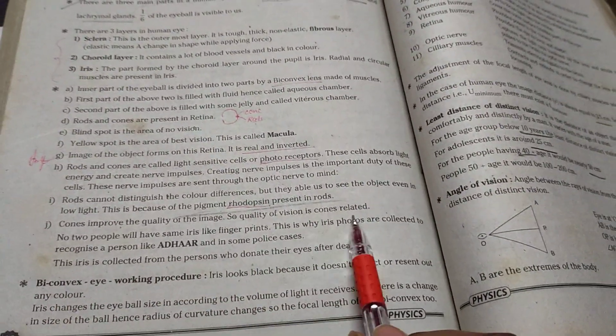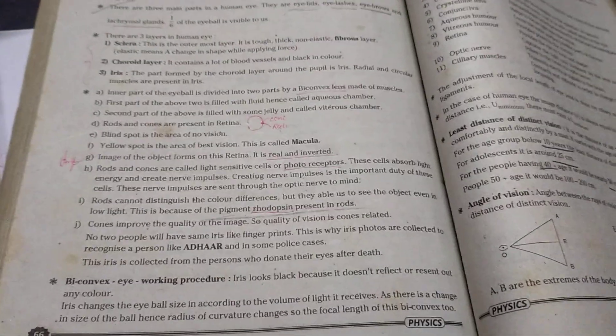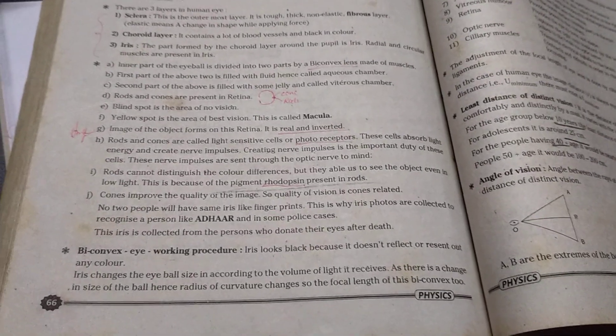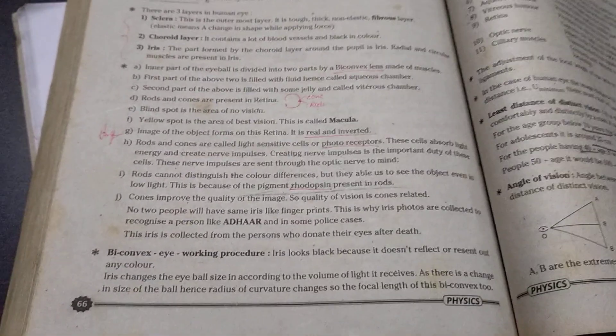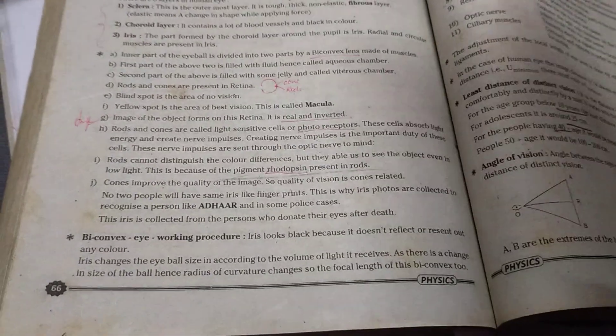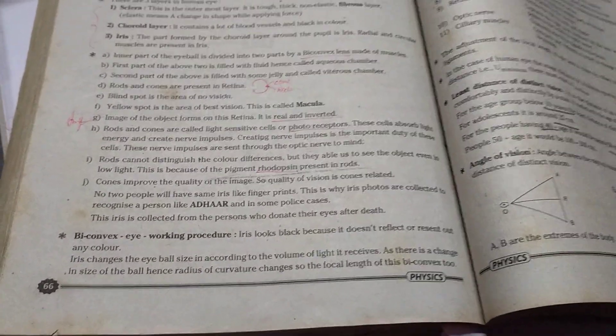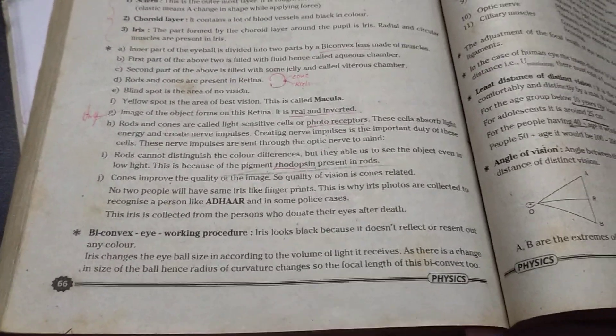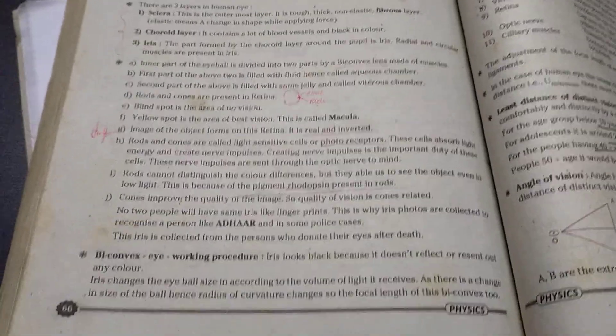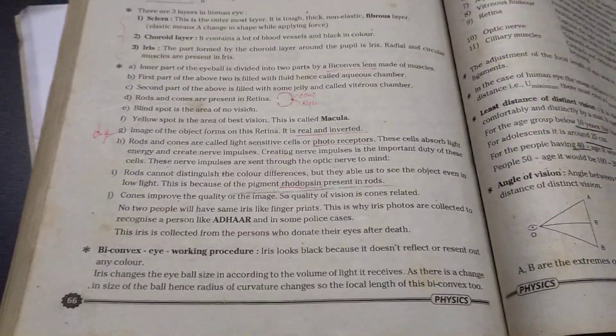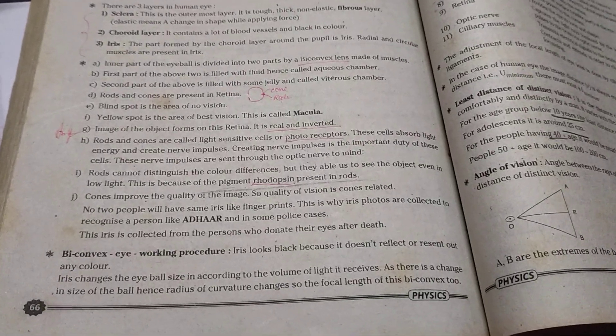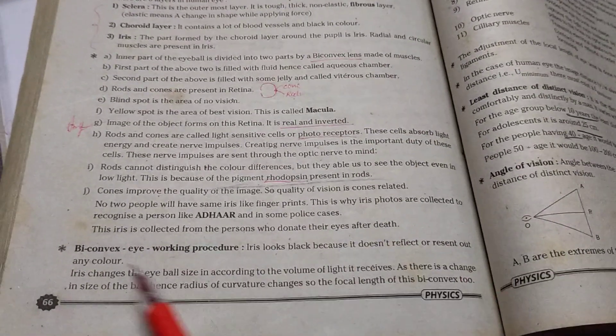Cones improve the quality of the image. Quality of vision is cones related. Image quality will increase when the color was there, not black and white. So guys I will tell you one example. You see color movie or black and white movie. Which movie you can like most? Obviously you can choose the color movie. So as like that cones improve the quality of the image. Quality of the image just depends on the color. So cones are responsible for the vision in the quality way.